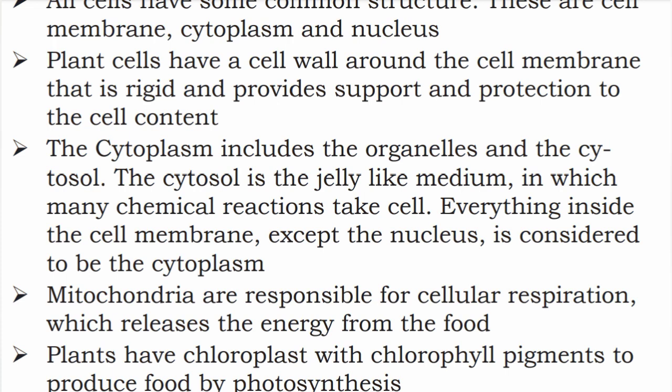Plants have chloroplasts with chlorophyll pigments to produce food by photosynthesis. Plants have a green colour pigment for photosynthesis. The dark green colour you see in plants is chlorophyll, found in chloroplasts with chlorophyll pigments.